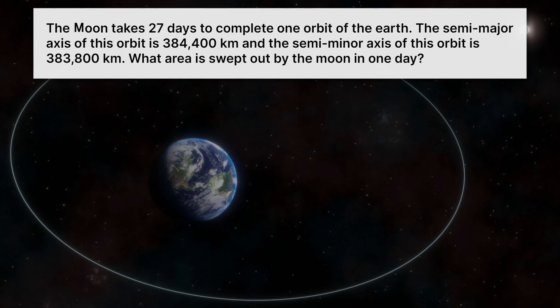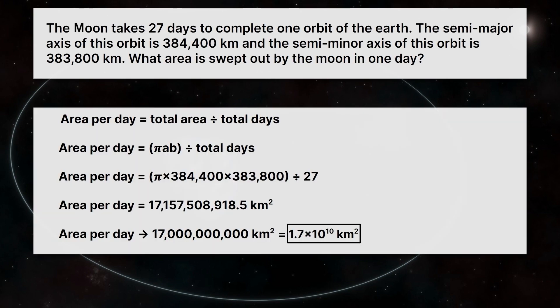Now it's your turn to practice. The Moon takes 27 days to complete one orbit of the Earth. The semi-major axis of this orbit is 384,400 kilometers, and the semi-minor axis is 383,800 kilometers. What area is swept out by the Moon in one day? The steps are very similar to the problem we just did — pause the video and give it a try. The answer is 1.7 × 10¹⁰ kilometers squared. If you missed it, compare your steps to see where you made your mistake.